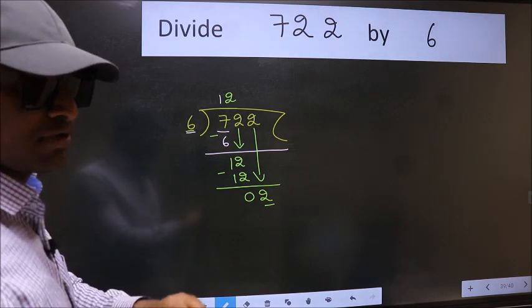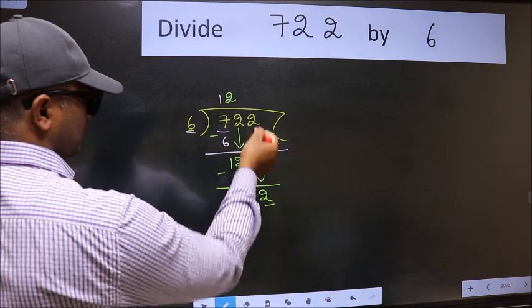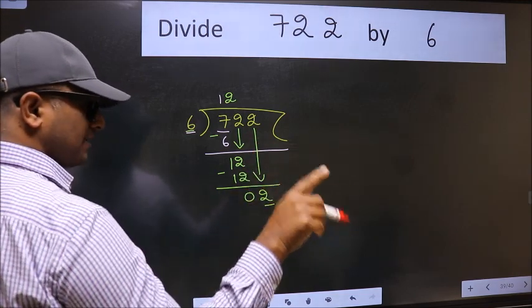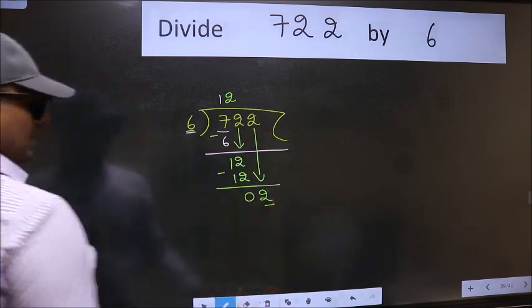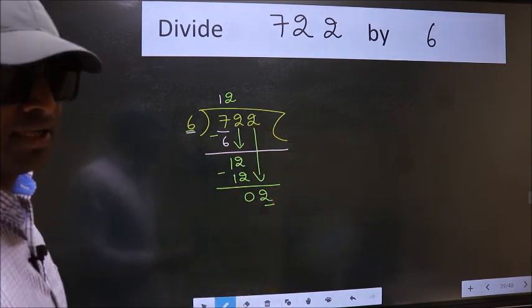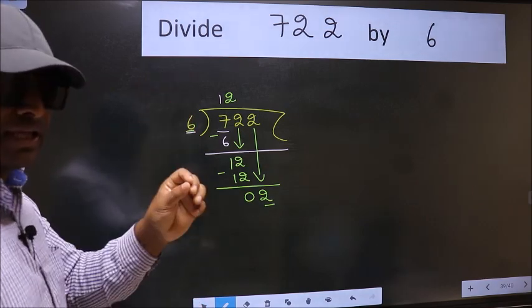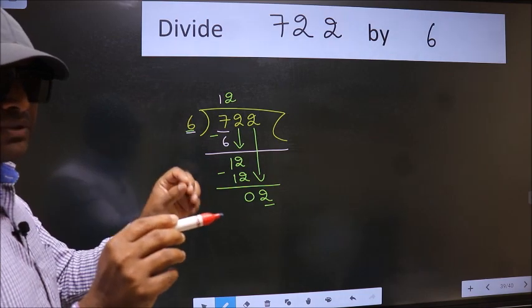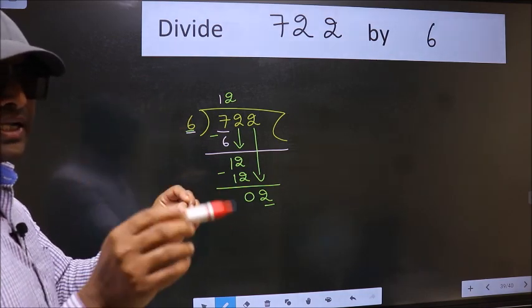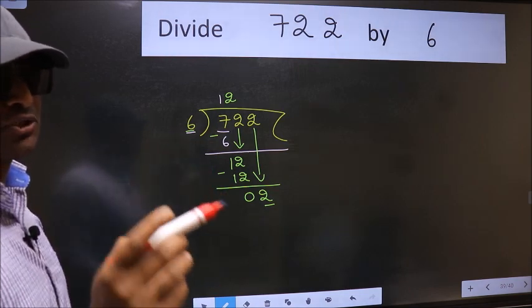Why is it wrong? Because just now you brought this number down. And in the same step, you want to put dot, take 0. Which is wrong. I repeat. Bring down the number and also put dot, take 0 - both at the same step, you should not do.